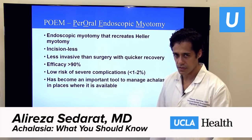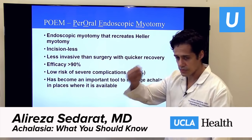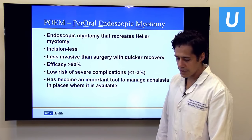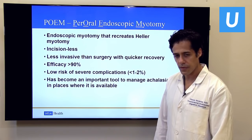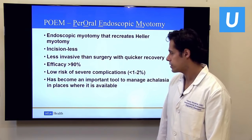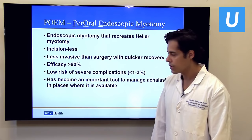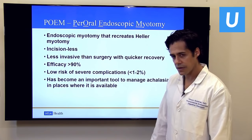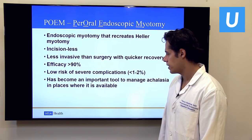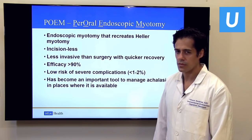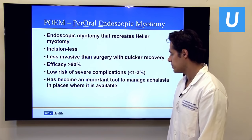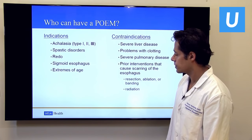POEM — per oral endoscopic myotomy — is my specialty. It goes through the mouth with a standard endoscope, and myotomy means cutting the muscle. It's essentially a less invasive way to achieve the same result as a Heller myotomy. It's incisionless, less invasive, with quicker recovery. Efficacy is greater than 90% in most studies, the risk of complications is very low, and it has an excellent safety record. Thousands of patients have had POEM throughout the world, including the United States.